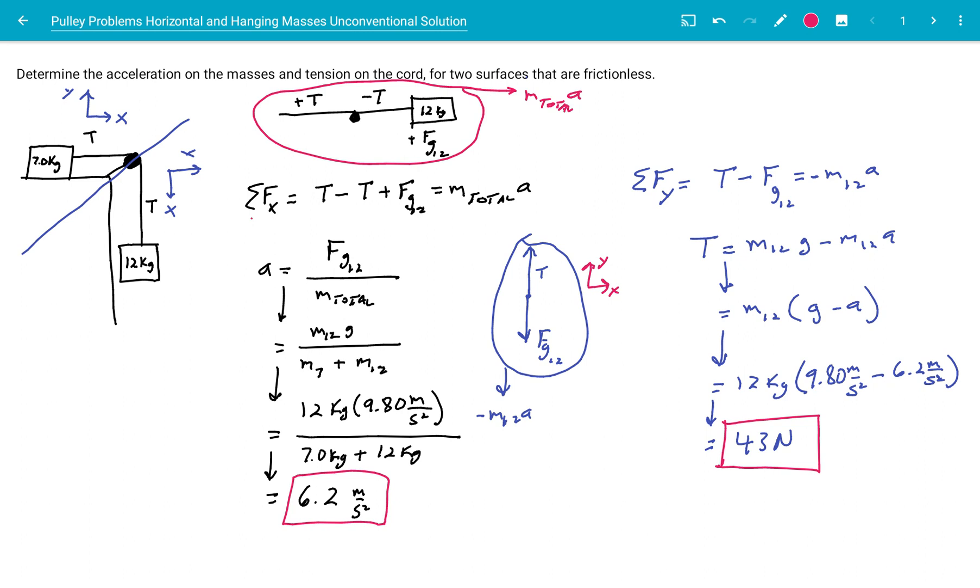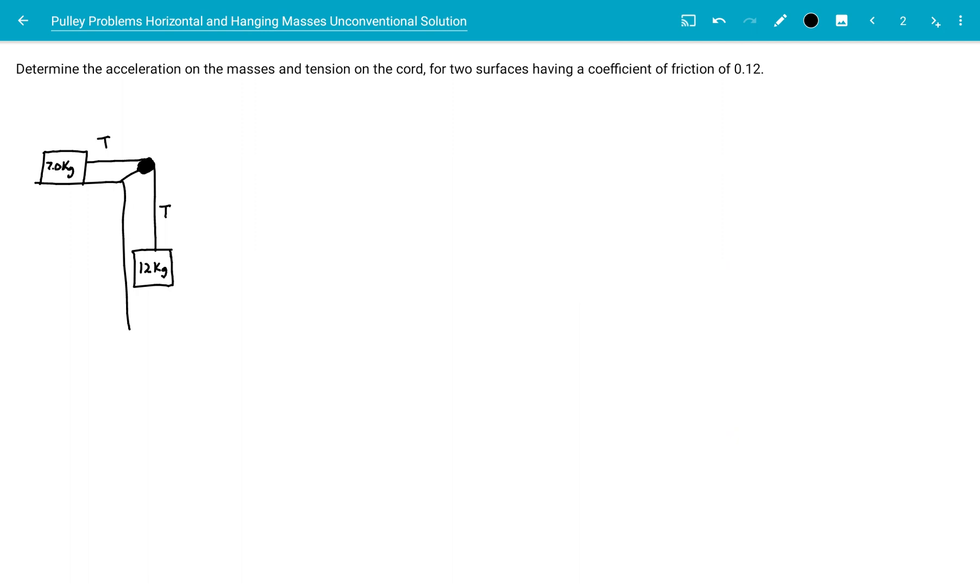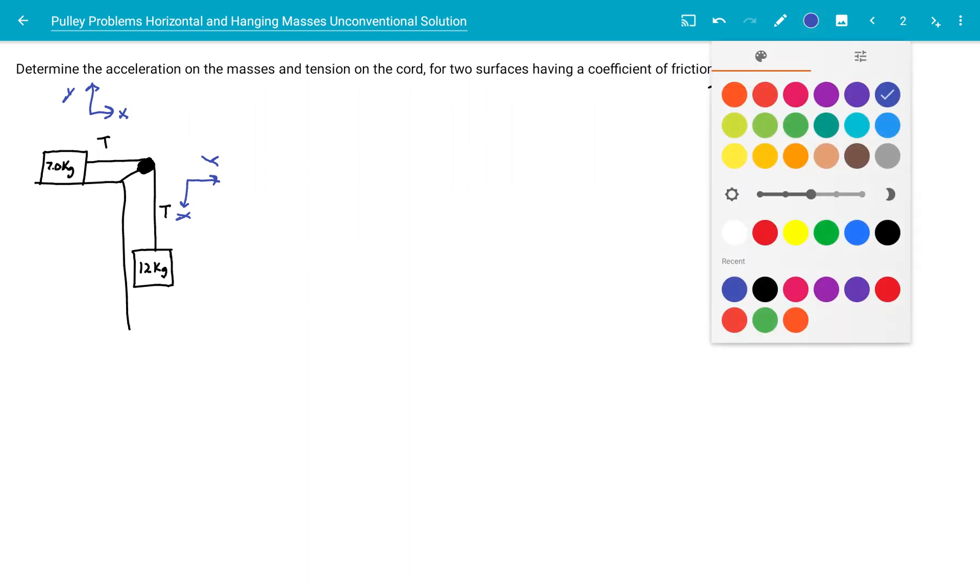Let's take this concept now and put it to a situation where we have friction. We have now a coefficient of friction that is 0.12. And we're going to do everything the same, the same unconventional method of looking at the chord as the x-axis. So I'm going to put my coordinate plane, x and y. Now we're going to be accounting for friction this time.